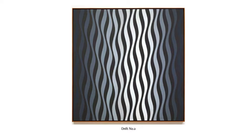Here is one called Drift Number Two. Check out those lines. Check out the value — where it gets more like a shadow or in the light. Check out that black and white, and see how it makes you feel.